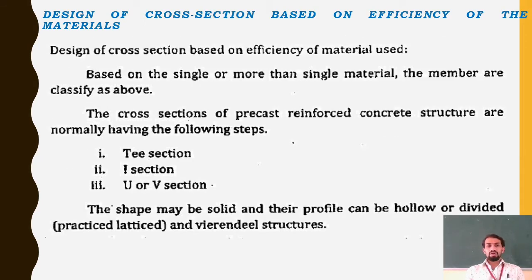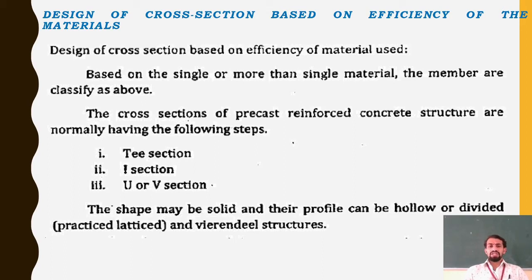Based on the cross-section efficiency of material used, members are classified as above. The cross-sections of a precast concrete structure normally include: T-section, I-section, and U or V section. The shape may be solid and the profile can be hollow or divided, including wind-drilled structures.